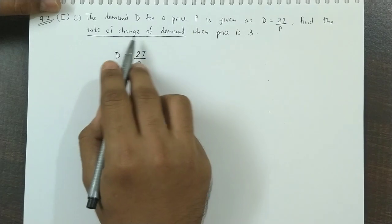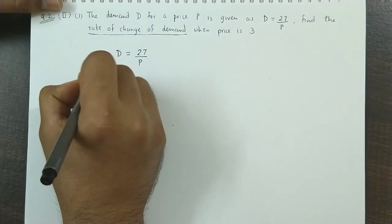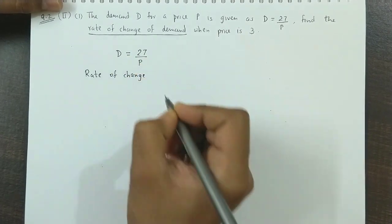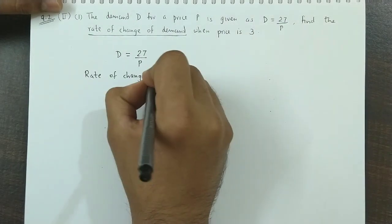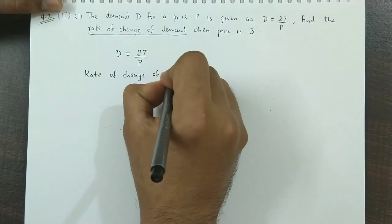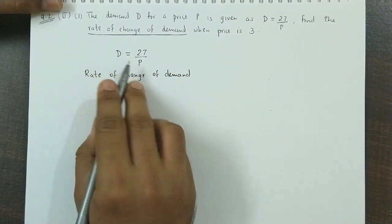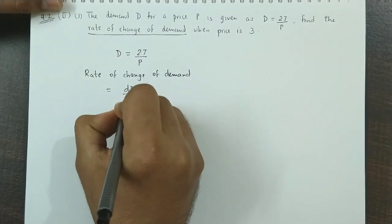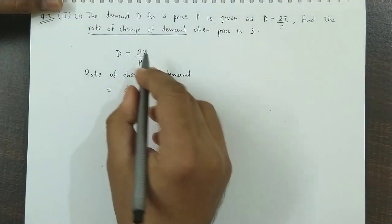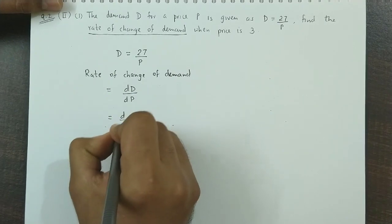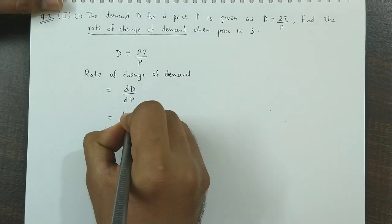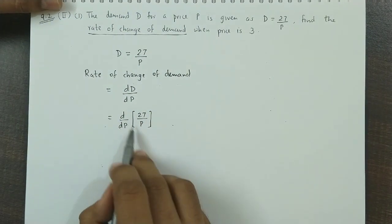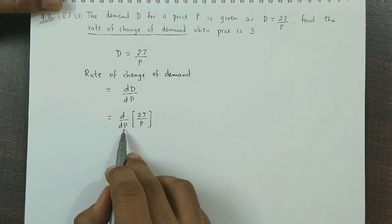First, we find the rate of change of demand. Remember, when the phrase comes to rate of change of, what is the derivative function? The rate of change of demand is related to price. It is nothing but the derivative of D with respect to P. So, we substitute D here. D is 27 upon P. So, you have to find the derivative of 27 by P with respect to P.